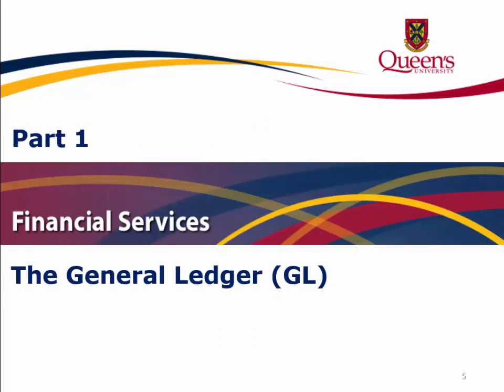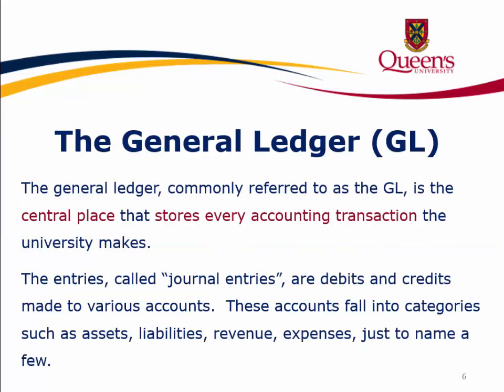Part 1: The General Ledger. The General Ledger, commonly referred to as the GL, is the central place that stores every accounting transaction the university makes. The entries, called journal entries, are debits and credits made to various accounts. These accounts fall into categories such as assets, liabilities, revenue, and expenses, just to name a few.